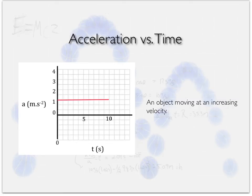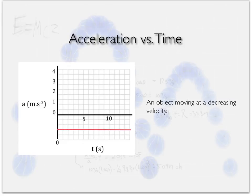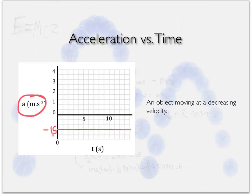An object with a decreasing velocity: on the acceleration-time graph, the line is below the x-axis — a negative value, say negative 1.5. That means velocity is decreasing by 1.5 meters per second every second, which is why acceleration is measured in meters per second squared — velocity changes by 1.5 m/s each second. Think carefully about why the unit is meters per second squared. Acceleration-time graphs are always zero, positive, or negative horizontal flat lines.